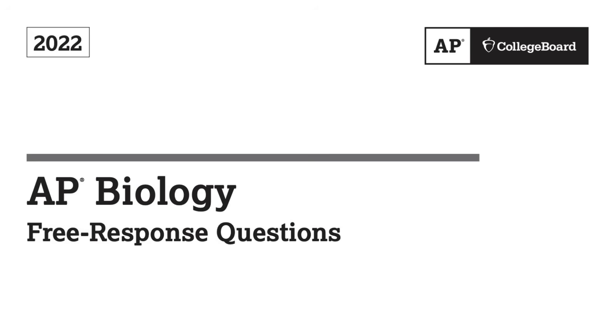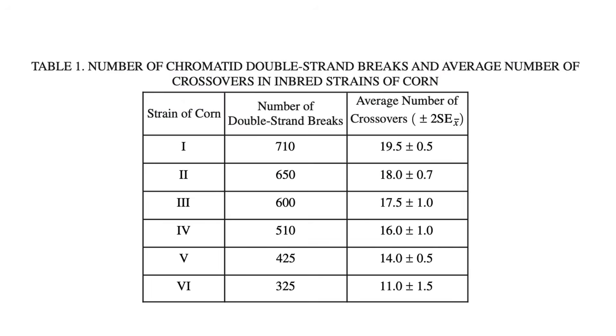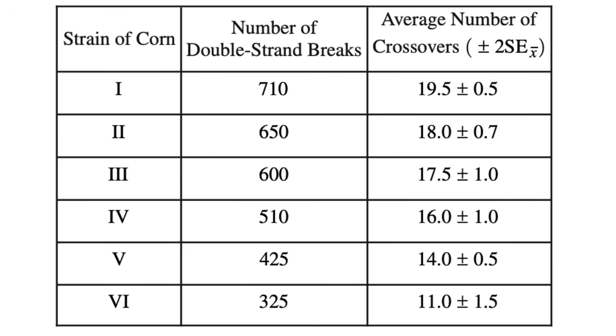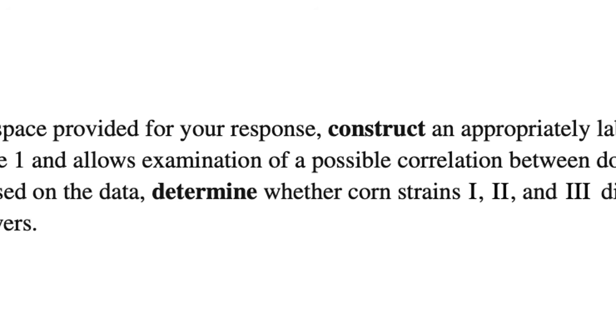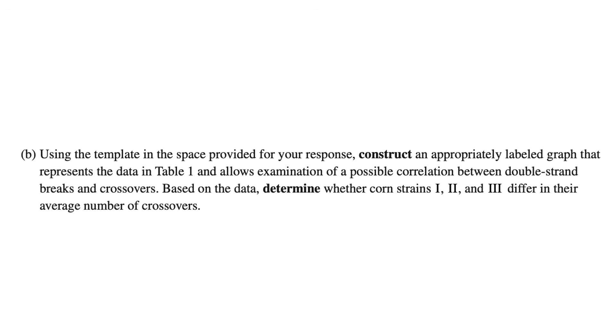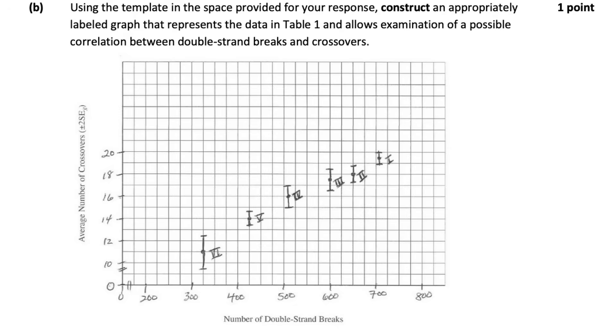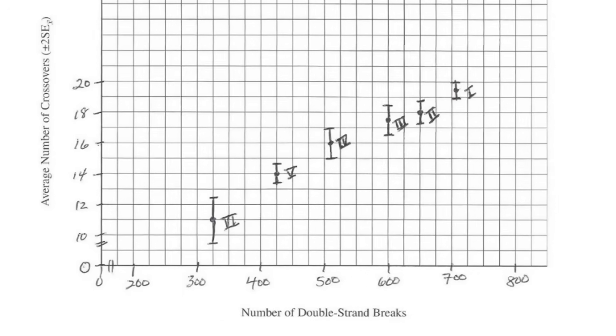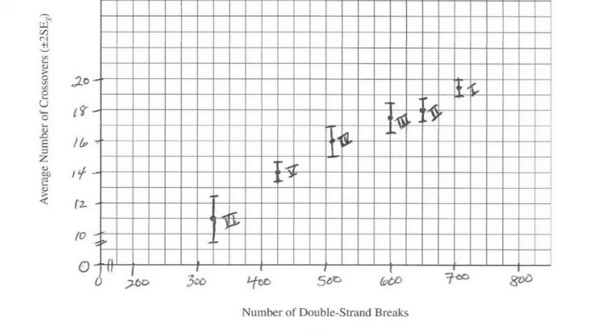Moving back another year to the 2022 FRQ, we're given a slightly different assignment. Notice how we're given both the strains of corn, which is a categorical variable, but also the number of double-stranded breaks, which is potentially a numerical and continuous variable. But the instruction says something interesting — it says construct a graph that allows the examination of a possible correlation between double-stranded breaks and crossovers. The word correlation means everything here, because correlation is about how a change in one variable affects a change in another. Therefore, we're given the very important clue that this should be a scatter plot relating continuous correlative variables. Looking at the sample answer, we can imagine a regression line and infer that there is a direct relationship between the number of double-stranded breaks and the number of crossovers.